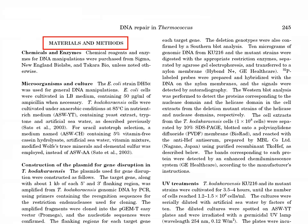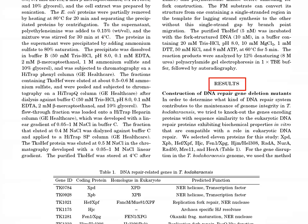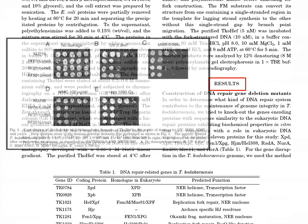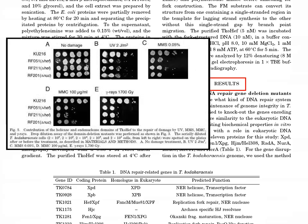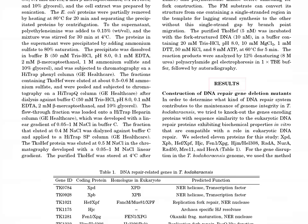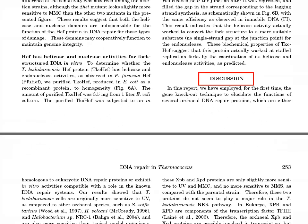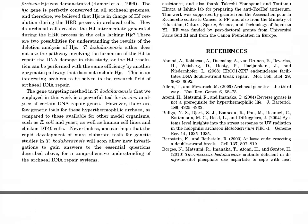Now that we have accessed the full text of the article, we can skim the document for further clues indicating that this is a primary research article. The Materials and Methods section is indicated here, and here is the Results section. Often, a Results section will include figures and tables depicting the data discussed in the text. Within the Discussion section, the authors interpret their findings. Don't forget that at the end of the primary article, you will find your list of references.